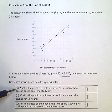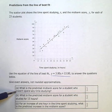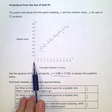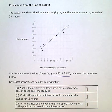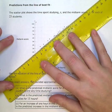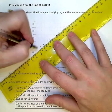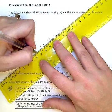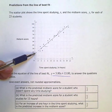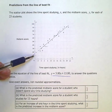So question A says, what is the predicted midterm score for a student who doesn't spend any time studying? So time spent studying here, we're looking at zero, zero time studying. And we can see from this line, it's not extended all the way to the y axis, but if I did extend it further, it looks like it would be crossing somewhere between 10 and 20.